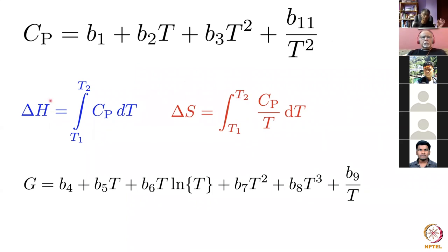You then have the capacity to work out the enthalpy change and the entropy change as temperature changes. By integrating this equation you get a general equation for the free energy, where the b's are the empirical constants and the temperature terms are obtained by integration. This is how you represent free energy inside computer programs like ThermoCalc, MTDATA, FACTSAGE, and so forth.